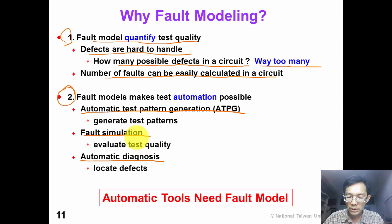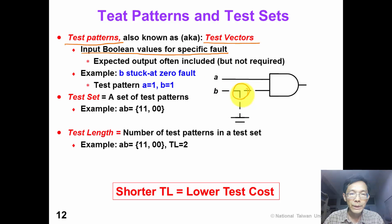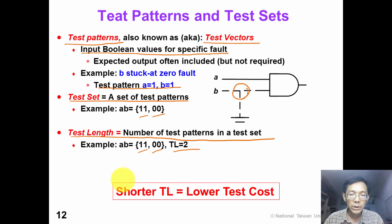With a fault model we can now define a test pattern. Test patterns, also known as test vectors, are input boolean values for a specific fault. For example, for a B stuck-at-0 fault, we need a test pattern AB = 1,1 to detect the fault. A test set is a set of test patterns — for example, {1,1} and {0,0}. The test length is the number of test patterns in a test set. To reduce test cost, it is preferred to reduce the test length.